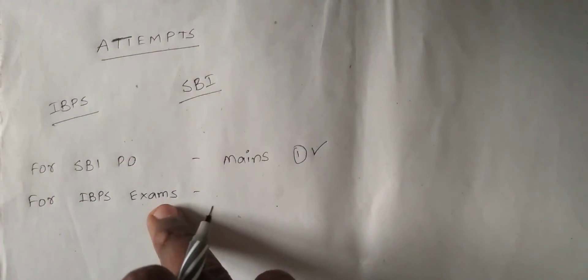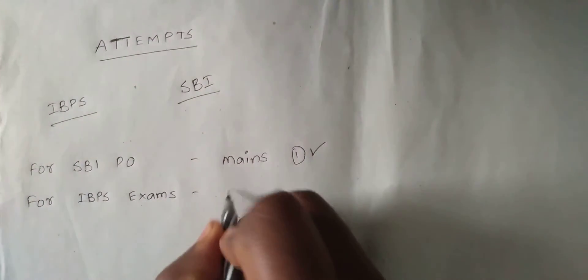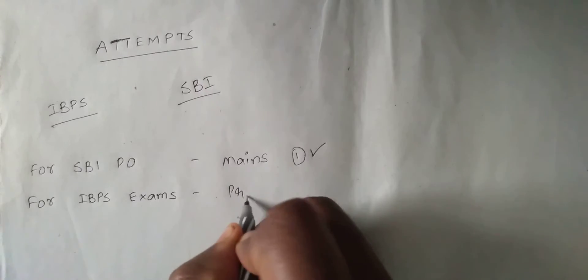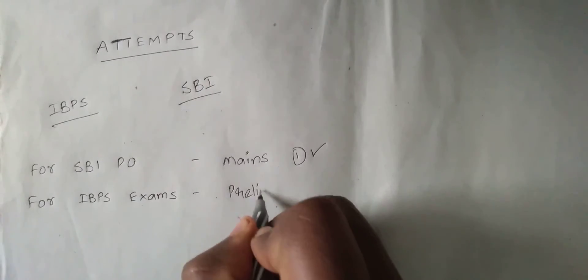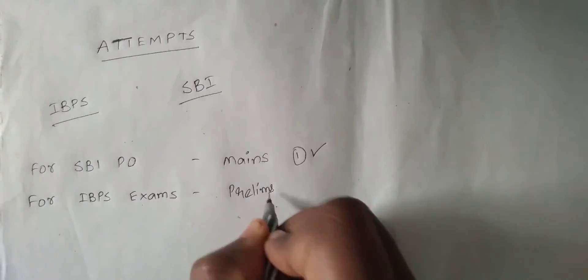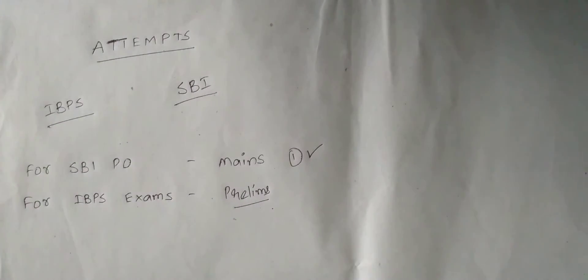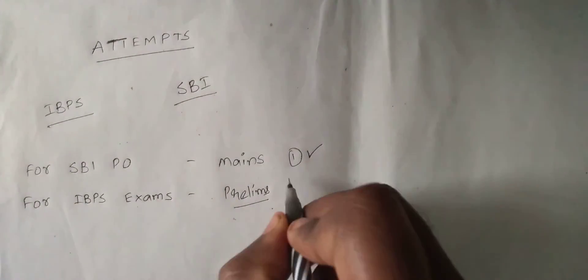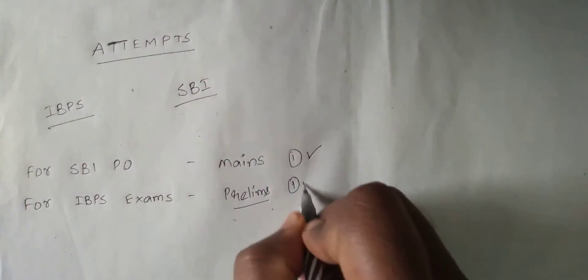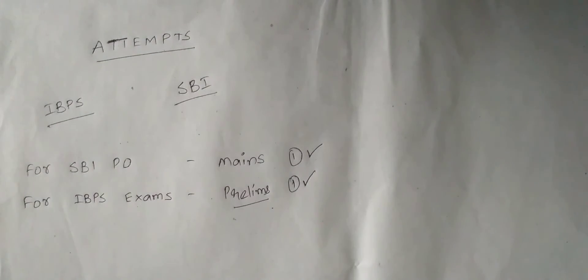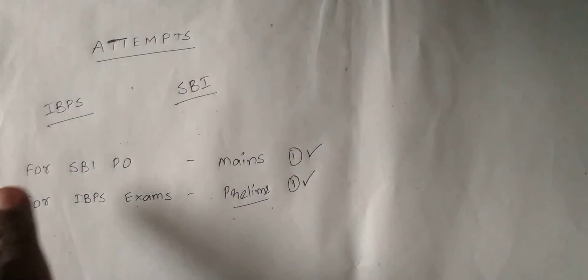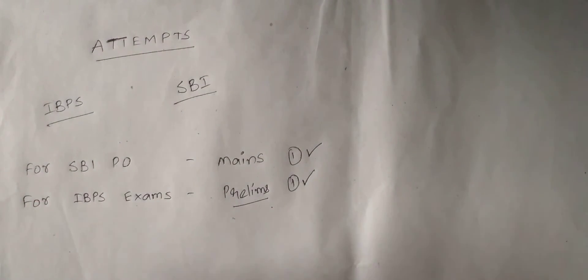But in the IBPS exams, simply appearing in the prelims counts as a completed attempt. This is the basic difference between SBI PO and IBPS in terms of how attempts are counted.